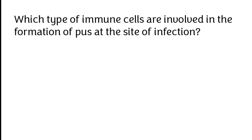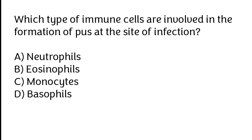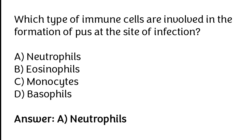Which type of immune cells are involved in the formation of pus at the site of infection? Neutrophils, eosinophils, monocytes, basophils. The correct answer is option A. Neutrophils are the type of immune cell involved in the formation of pus at the site of infection.